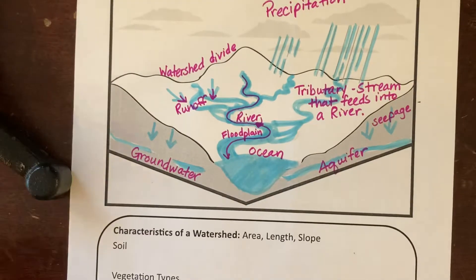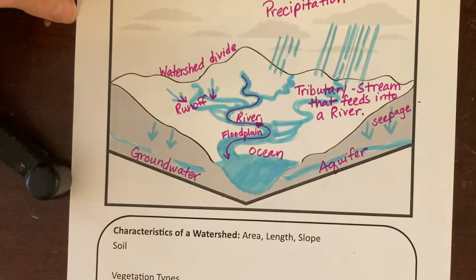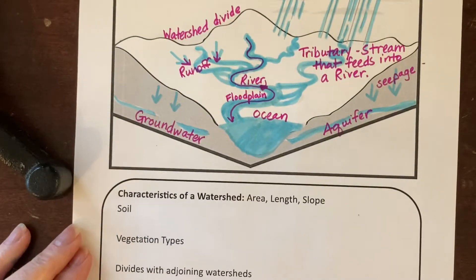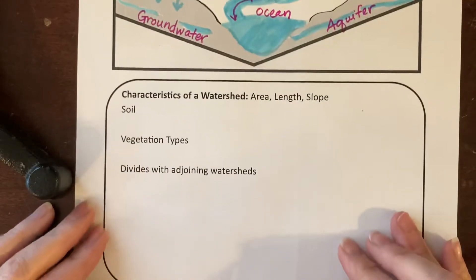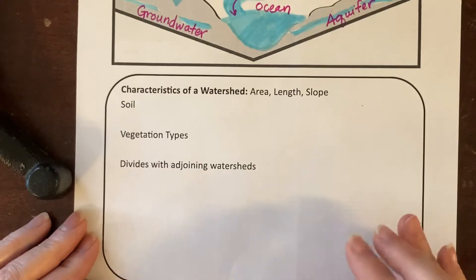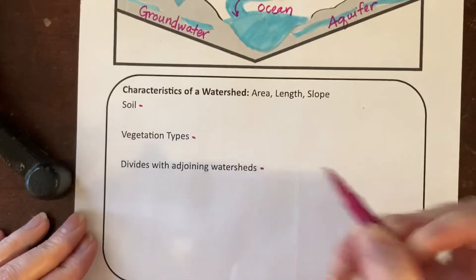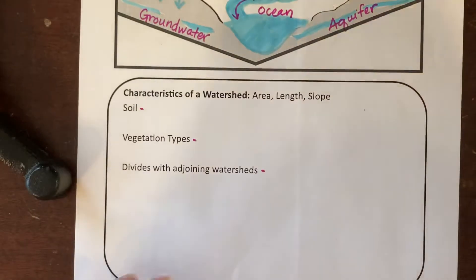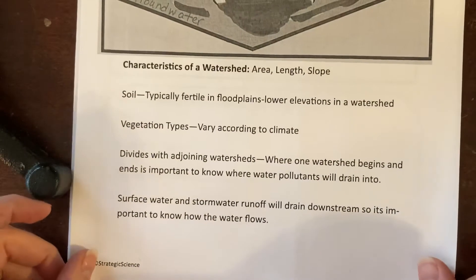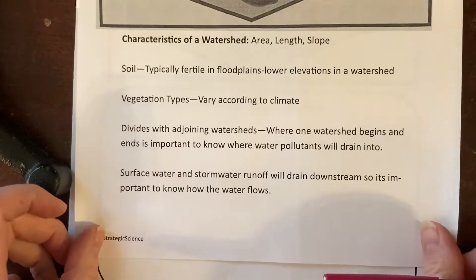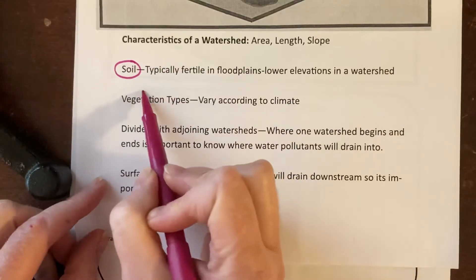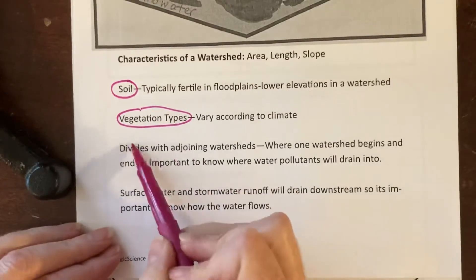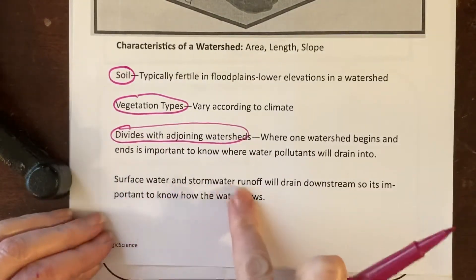You can see watershed divides on satellite maps — people have mapped the watersheds and it's easy to see on some internet sites. Now let's talk about some characteristics of a watershed that you need to know for the AP test. You're going to hand-write and fill in these answers; I'll give you the typed version since that will be easier to read and copy. You need to fill in soil, vegetation types, and divides with adjoining watersheds.